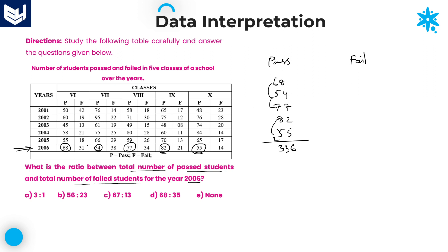Now write down the failed students in 2006, starting from class 6: 31, 38, 34, 21, 14. Add all the values.